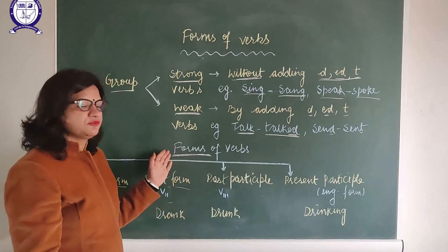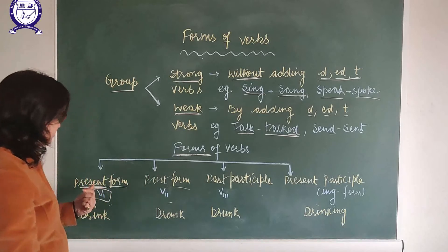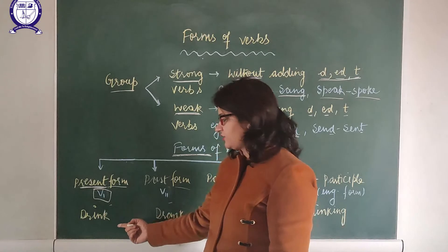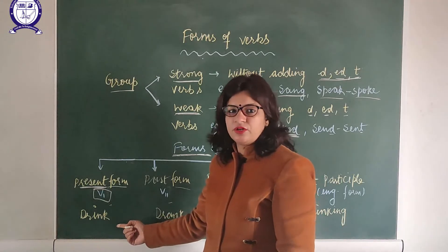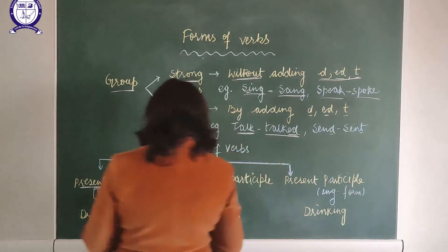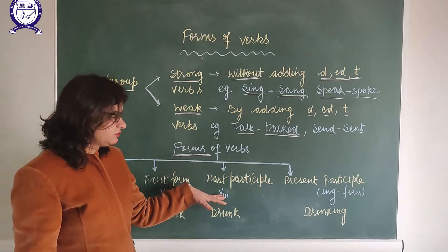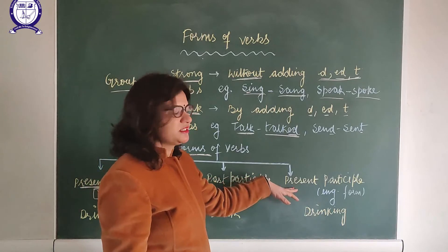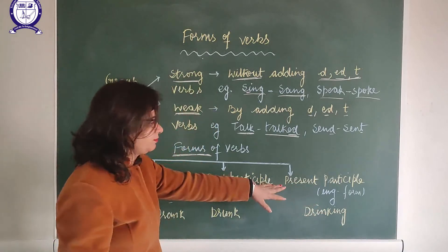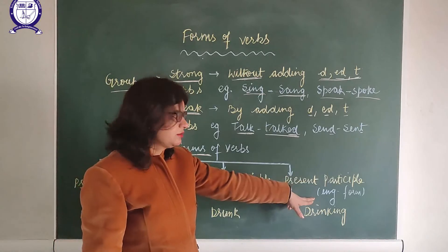Now come the forms of the verb. There are four forms of the verb. The first one is the present form, which we call the first form of the verb. The second one is the past form, which we call the second form of the verb. The next one is the past participle form, or the third form. And the fourth one is the present participle form — or the ING form — because in the present form we add ING, so it becomes the ING form.